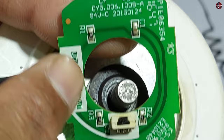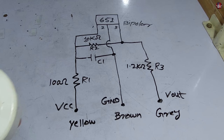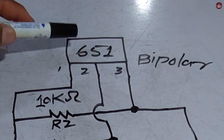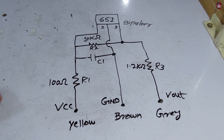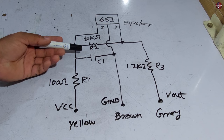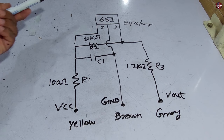Zooming the camera in, we can see a capacitor, some resistors, and a hall sensor installed inside the motor. Looking at the circuit diagram: the hall sensor installed in this motor is number 651, and it is a bipolar hall sensor, which passes analog signals. The motherboard changes these signals to provide feedback to the microcontroller. 10 kΩ resistors are installed here along with a capacitor, a 100 Ω resistor, and a 1.2 kΩ resistor. This is the schematic of this blower motor.